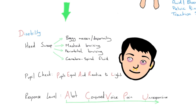For Disability, we start with a head sweep - get hands on the head and sweep the front, sides, and back, feeling for any boggy masses or deformity. We're looking and feeling for mastoid bruising behind the ears, periorbital bruising below the eyes and around the orbits, and cerebrospinal fluid (CSF) - a yellow straw-like fluid coming out of the ears and nose suggesting disruption of the cranial vault. This bruising represents blood flowing out of the skull into other parts of the cranial vault.